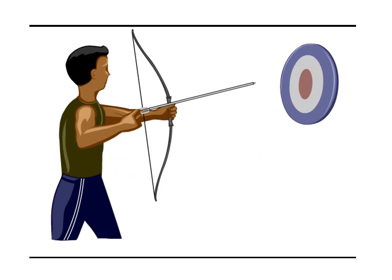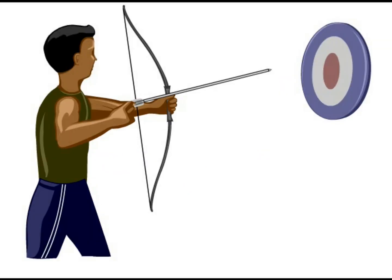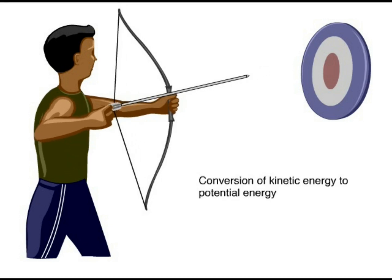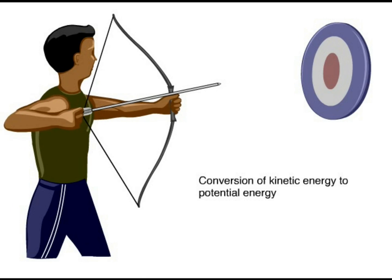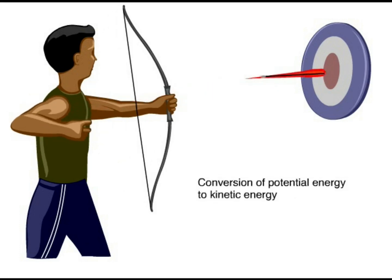Energy is the capacity to cause change. Kinetic energy is the energy associated with motion; energy that is not kinetic is called potential energy — energy that matter possesses because of its location or structure. Energy is neither created nor destroyed, but converted from one form to another; this property is called the conservation of energy. As the archer's arm pulls back the bowstring, kinetic energy from the arm's motion is converted to potential energy in the tense bowstring and arrow. When the bowstring is released, the stored potential energy is converted into the kinetic energy of the moving arrow.